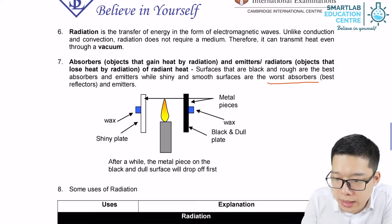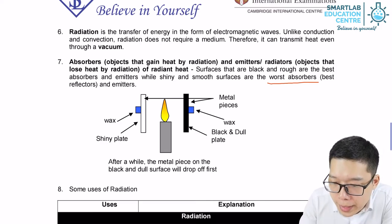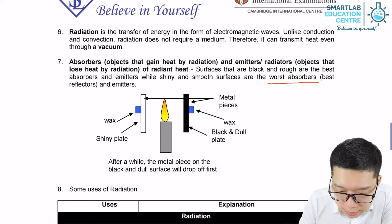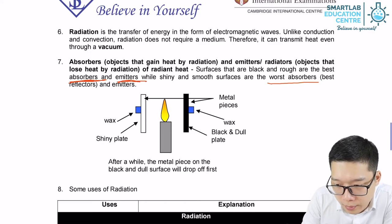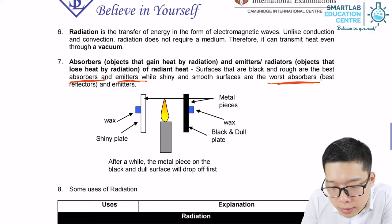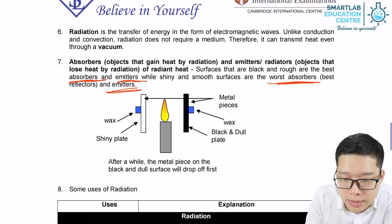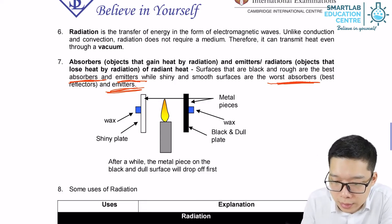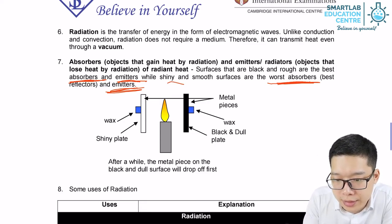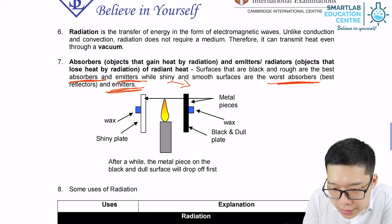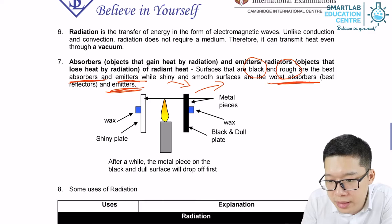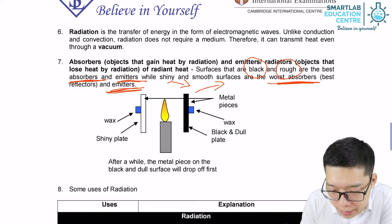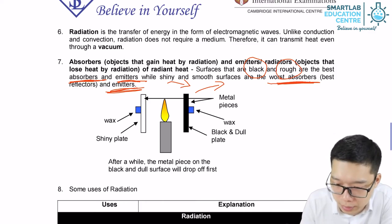But do note, a better absorber is also a better emitter. A worst absorber is also a worst emitter. So no matter is energy taken in by radiation or energy given out by radiation. A dark color, rough surface is better emitter and absorber.